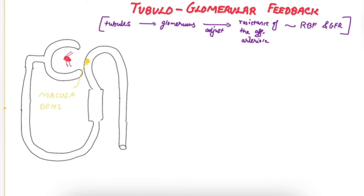Please remember that the macula densa expresses the same transport proteins as the thick ascending limb.